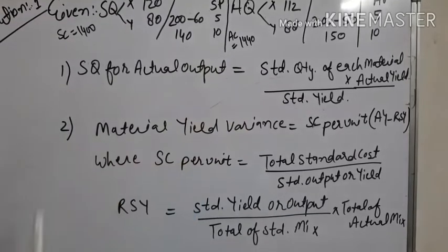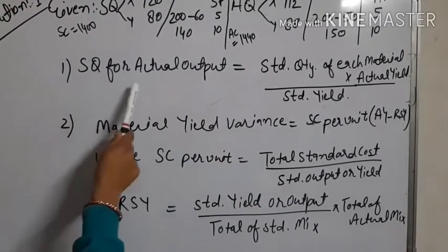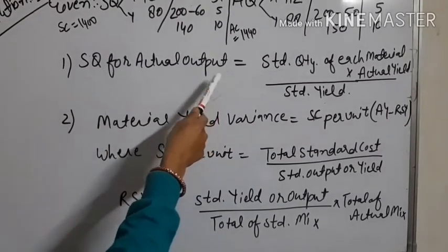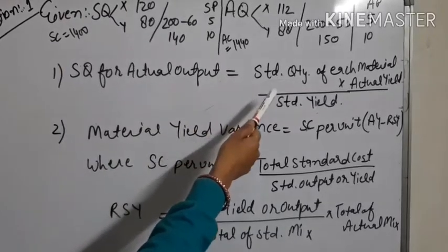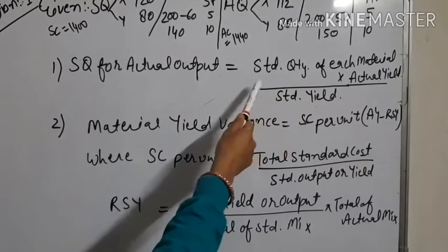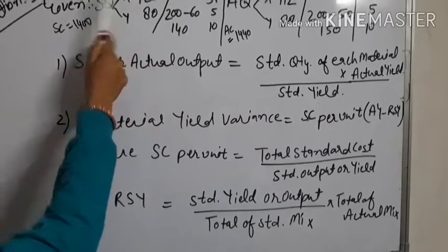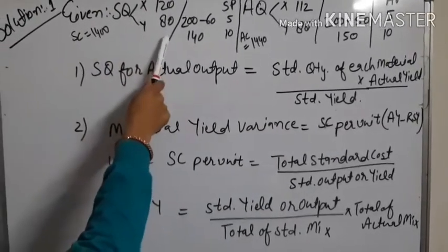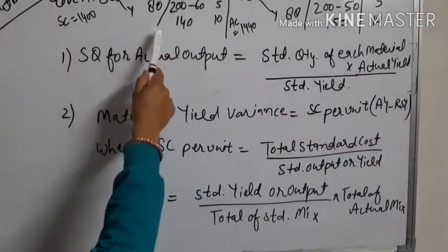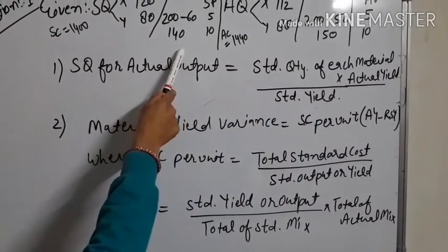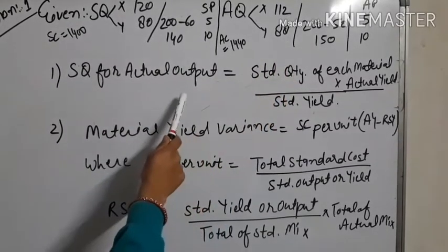Now we will calculate two values. First, standard quantity for actual output. The formula is: standard quantity for actual output equals standard quantity of each material — 120 for X and 80 for Y — divided by standard yield (140), multiplied by actual yield (150). We will calculate this for both materials.